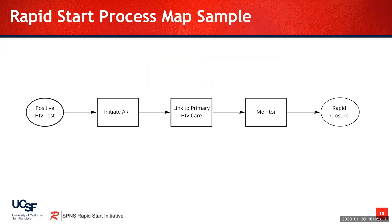For example, when thinking about a rapid start program, a sample process map like our 'let's make breakfast' might look like this: a starting point of a positive HIV test, moving to initiate ART, to link to primary care, and lastly, monitoring of the patient to rapid case closure.